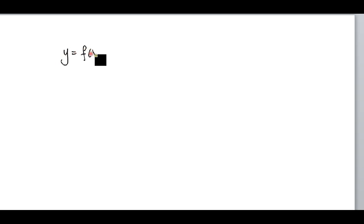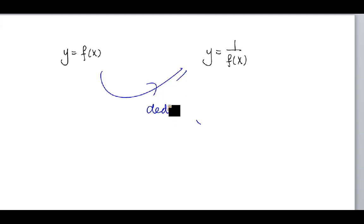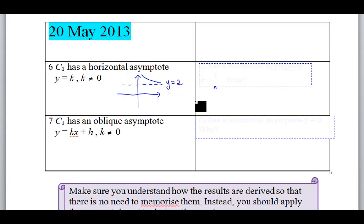Last Wednesday we said that we have y = f(x) and we want to deduce y = 1 over f(x). We looked at page 12 and its long table. We stopped at point number five. Is there any particular point you find unclear?